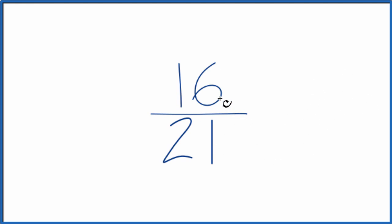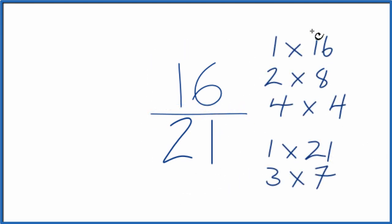So let's write the factors for 16 and 21. So these are the factors for 16 and for 21. We want to find a common factor.